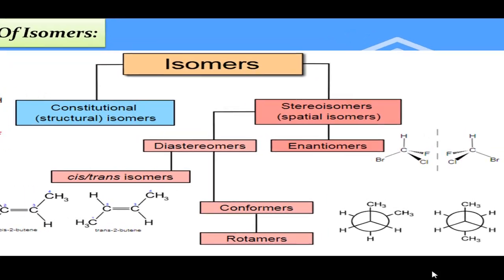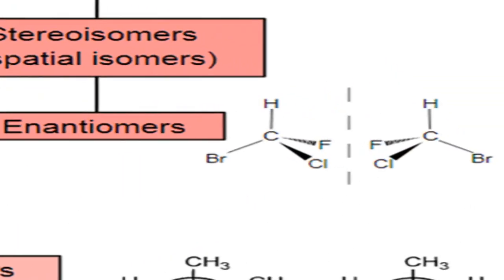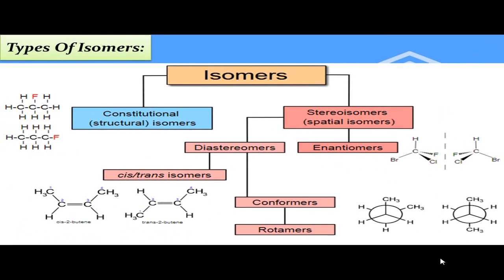Stereo isomers کی دو types اس base پر ہیں کہ آیا وہ ایک دوسرے کے mirror image ہیں یا نہیں۔ اگر دونوں ایک دوسرے کے mirror image ہوں تو انہیں enantiomers کہتے ہیں، اور اگر mirror image نہ ہوں تو diastereomers کہتے ہیں۔ Cis and trans isomers میں دو carbon atoms doubly bonded ہوتے ہیں جن کو rotate نہیں کیا جا سکتا۔